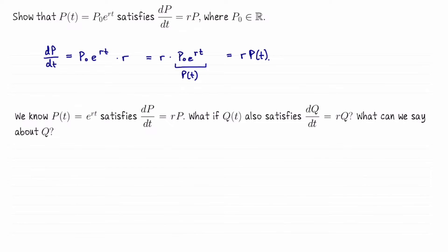Here's a follow-up question. We know the function P of t equals e to the rt — choosing P₀ equal to one — satisfies the differential equation dp/dt equals r times P. What if there's some other function q of t which also makes the differential equation true? What would we be able to say about q? Is there any other kind of function — say, sine of rt, or t cubed — that could also work? The answer is no, and I would like to prove this.